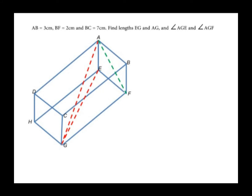We take an example. In this cuboid, given AB is 3 cm, PF is 2 cm, and BC is 7 cm, we want to find the lengths EG and AG, and also the angles AGE and AGF. In a cuboid, all the edges intersect at 90 degrees, meaning that whenever the faces meet, they do so at 90 degrees. To work out such a question, it is important to try and imagine the shape carrying the required side or angle in isolation.